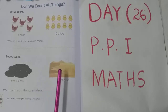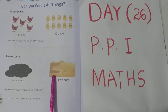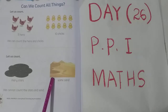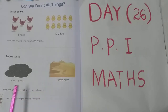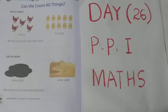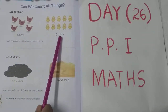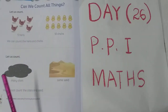See the next picture. It's some sand. We cannot count the sand as well. We cannot count the stars and sand, but we can count the hens and chicks.